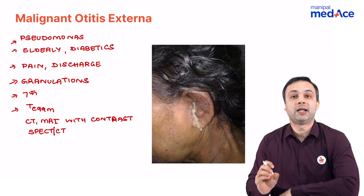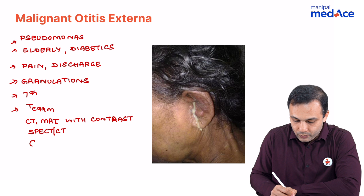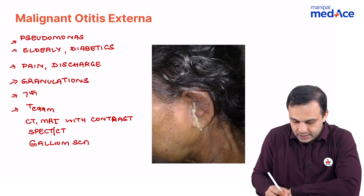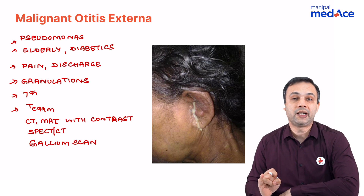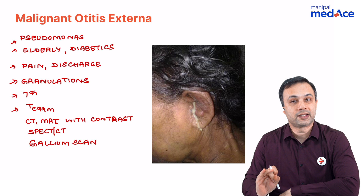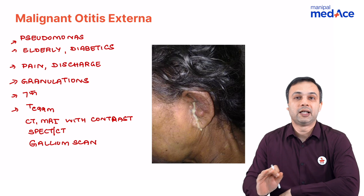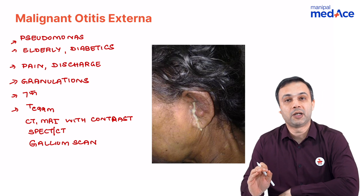CT and MRI help in diagnosing the extent of the disease. There is also an investigation called Gallium scan, which is used to detect the efficacy of treatment. In summary: Technetium-99m is earliest to diagnose, CT and MRI give the extent of disease, and Gallium scan assesses the efficacy of treatment.